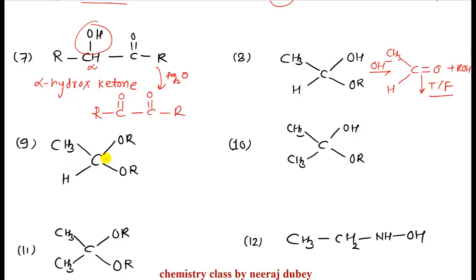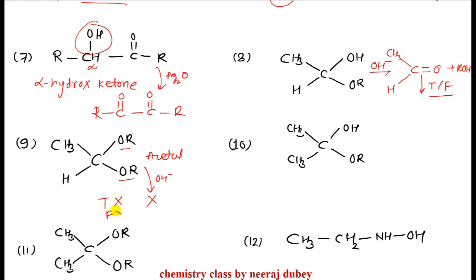Next example: this compound is formed from aldehyde with two OR groups attached — this is an acetal. The medium we are using is basic, and in basic medium acetal neither forms nor dissociates. So no aldehyde will be generated, and therefore this acetal compound will not react with Tollens' and Fehling's.